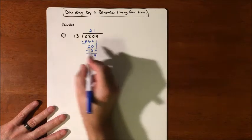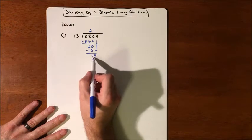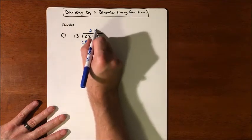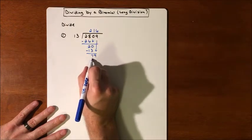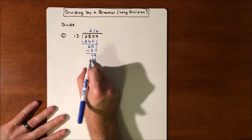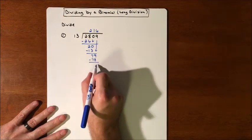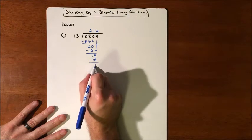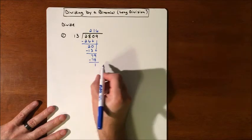And we bring down, which gets us 79. How many times does 13 go into 79? It goes into it 6 times, which is 78. So we multiply, we subtract, and we get a remainder of 1.